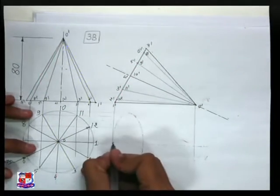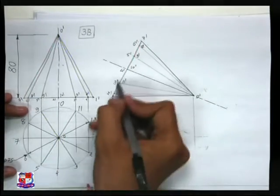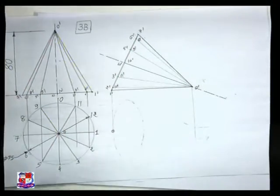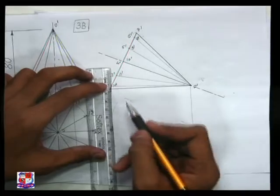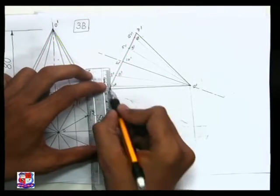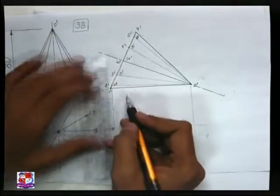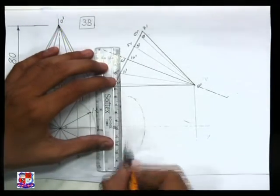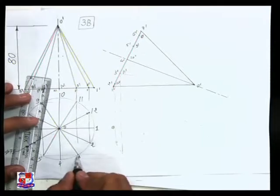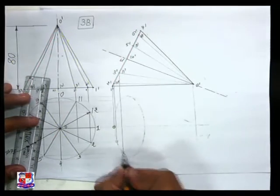So here is one point, that is point P1. Similarly, vertical line from point 2 like this and horizontal line from point 2, here is point number 2. Vertical line from point 3 like this and horizontal line from point 3, here is point number 3.